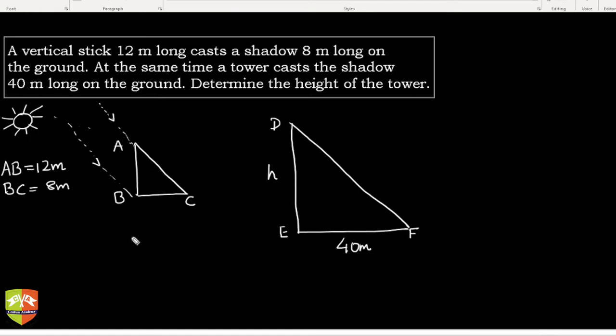How do we approach it? Clearly, the stick as well as the tower is perpendicular to the ground, so this is 90 degrees. The inclination of the sun will be the same. At the same time during the day, the theta angle will be the same because